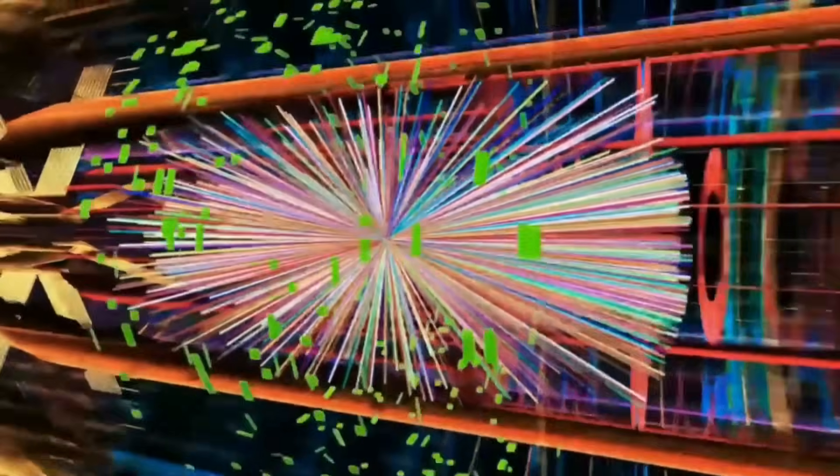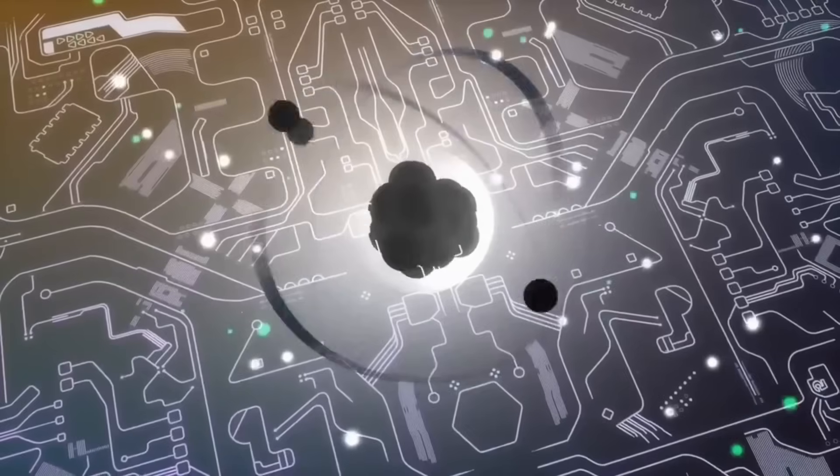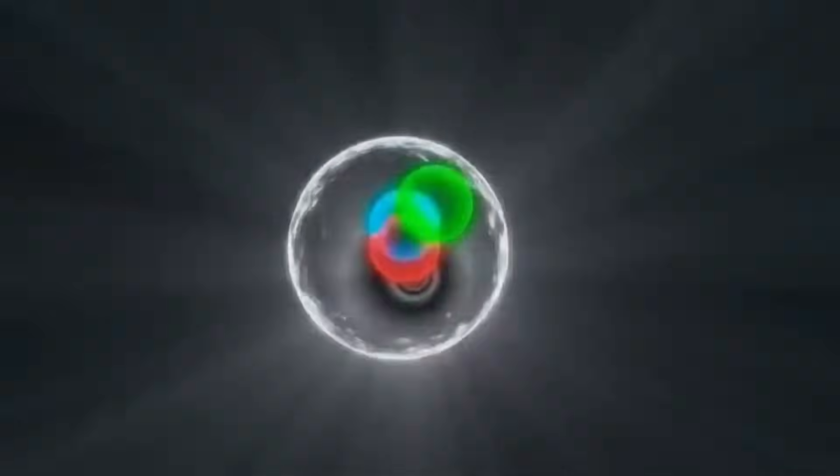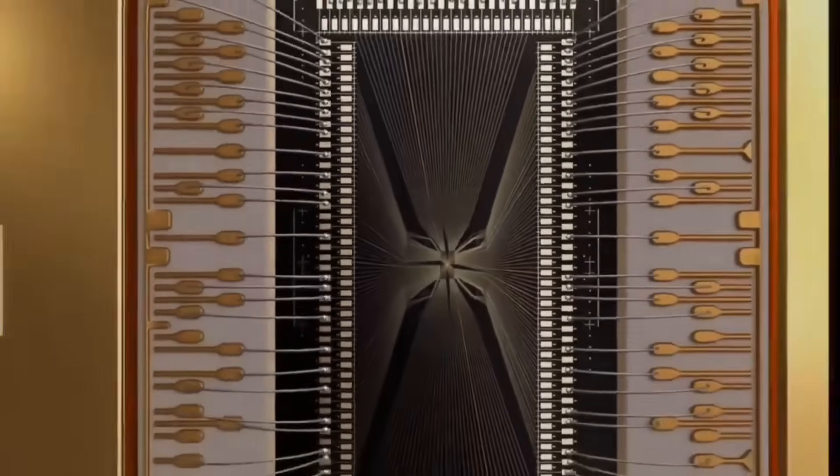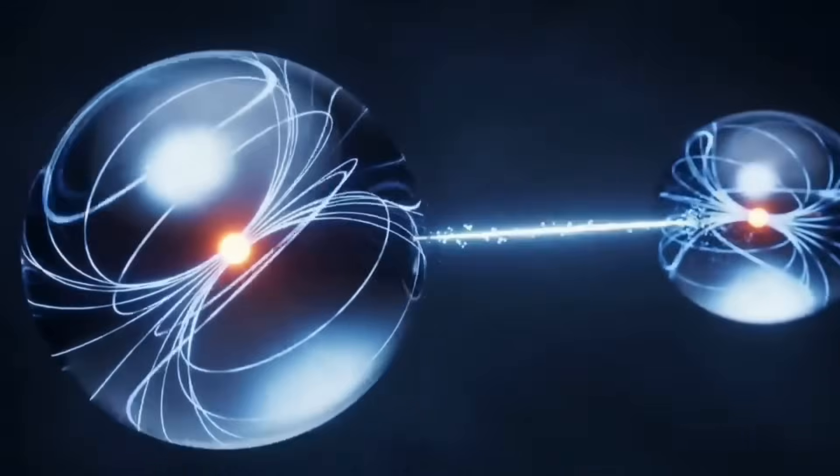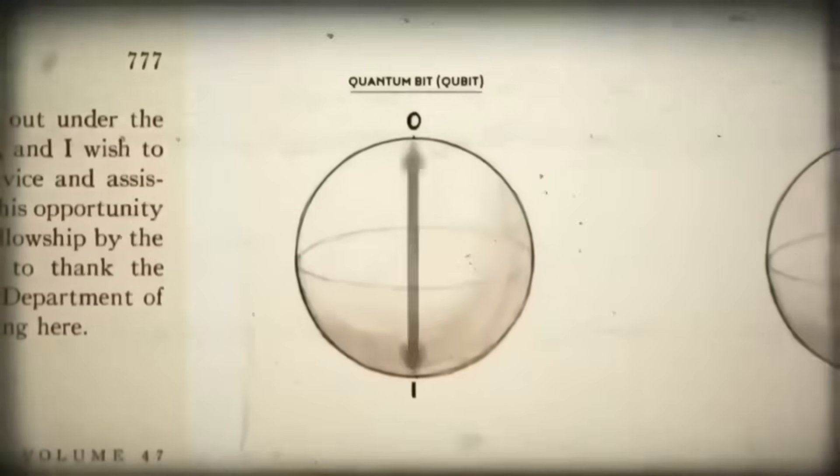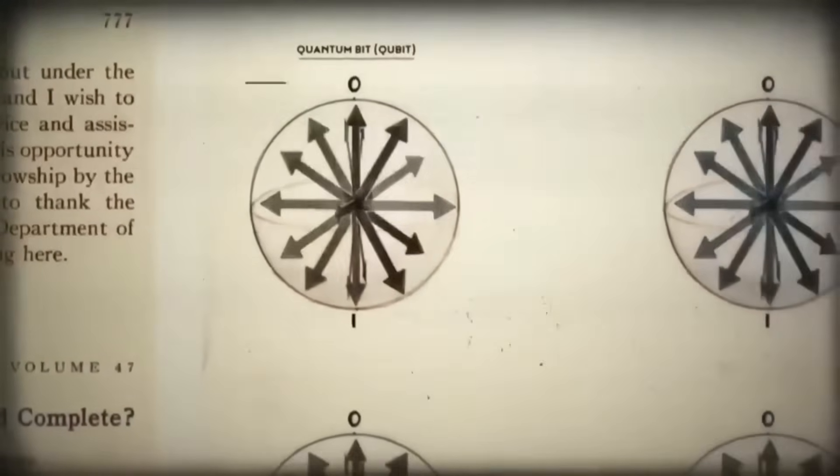Your brain operates like a hologram. Each part contains information about the whole. This revolutionary discovery challenges everything we thought we knew about how memories and consciousness work. Neuroscientist Karl Pribram's holonomic brain theory showed that memories aren't stored in specific locations like files in a computer. When Pribram studied patients with brain injuries, he found something remarkable. Removing large portions of brain tissue didn't erase specific memories. Instead, memories remained intact but became less detailed, exactly like what happens when you cut a hologram into pieces.